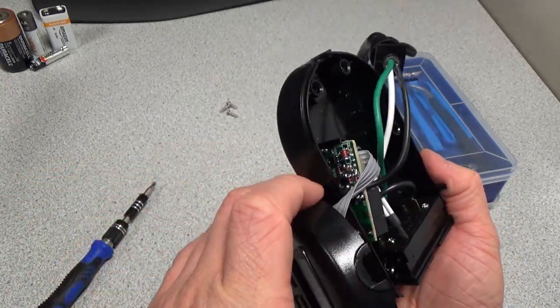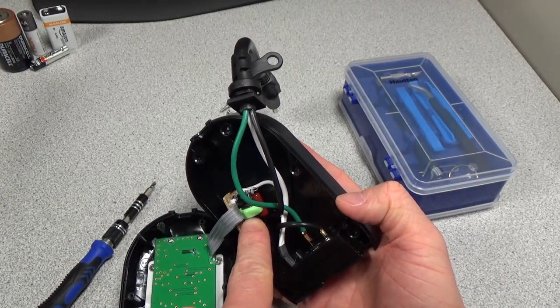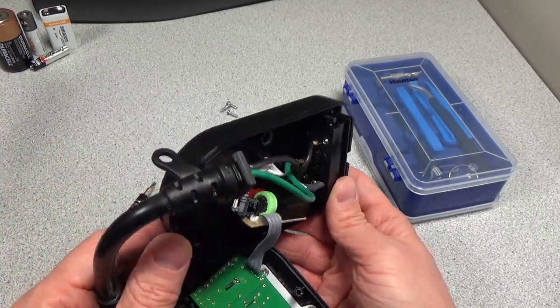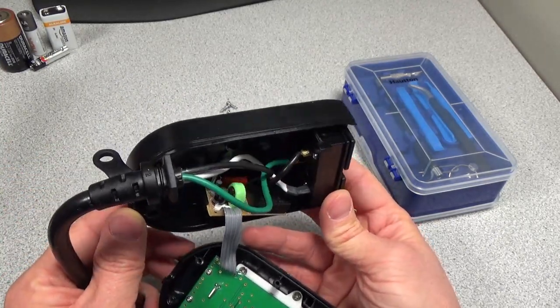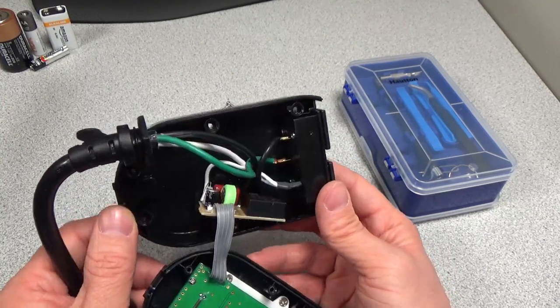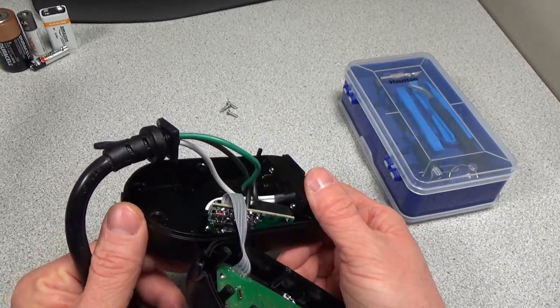This tiny little board right here is the whole power supply for the unit and has a little battery. It looks like it is a capacitive dropper style, so that probably is more likely the reason why we didn't see the power consumption change when we switch this relay on or off.